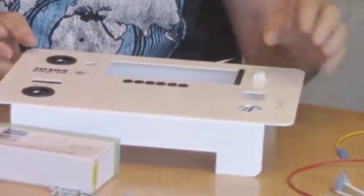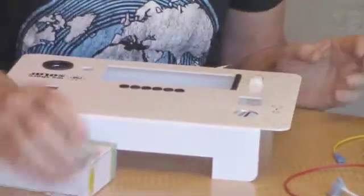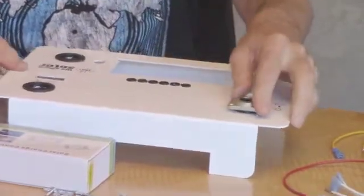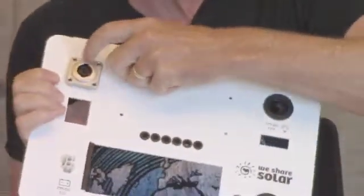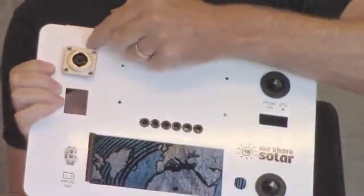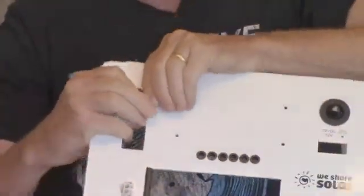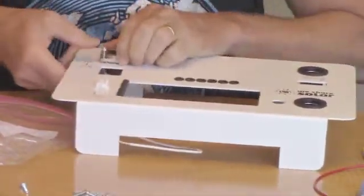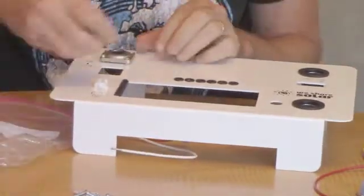The next piece you want to put in is the solar socket. This also has an orientation. You want the writing to be facing the top. It's got a little printed number here. That should be facing the top of the chassis.